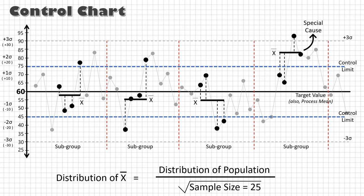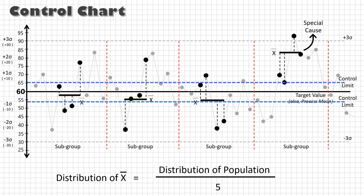The larger the size of the sample, the closer will be the control limits to the process mean. For example, for a sample size of 25, the control limits will be within one-fifth of the process distribution.